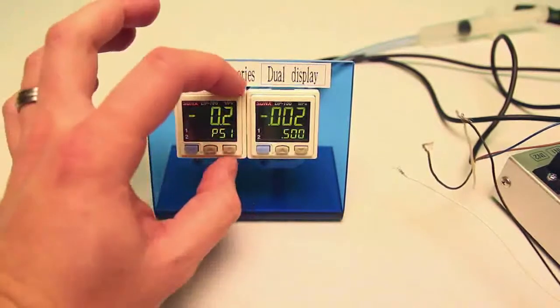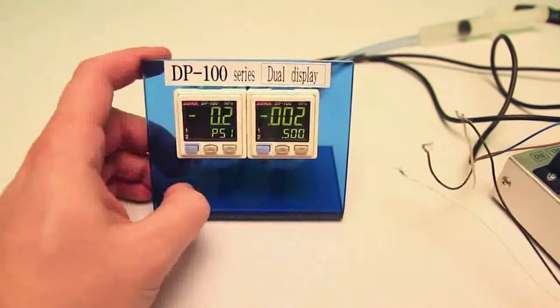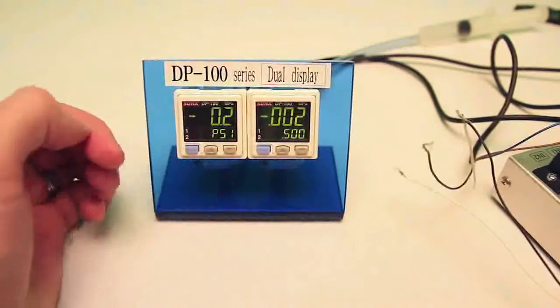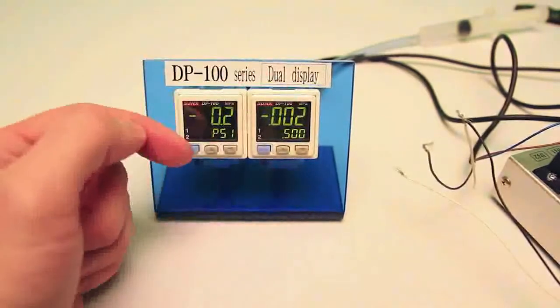Now what this will do is it'll take a set of parameters from one sensor and transfer it over to a sub sensor. Now this is great for machine builders who are constantly setting the sensors to the same parameters. You only have to do it once and then copy it every single other time.